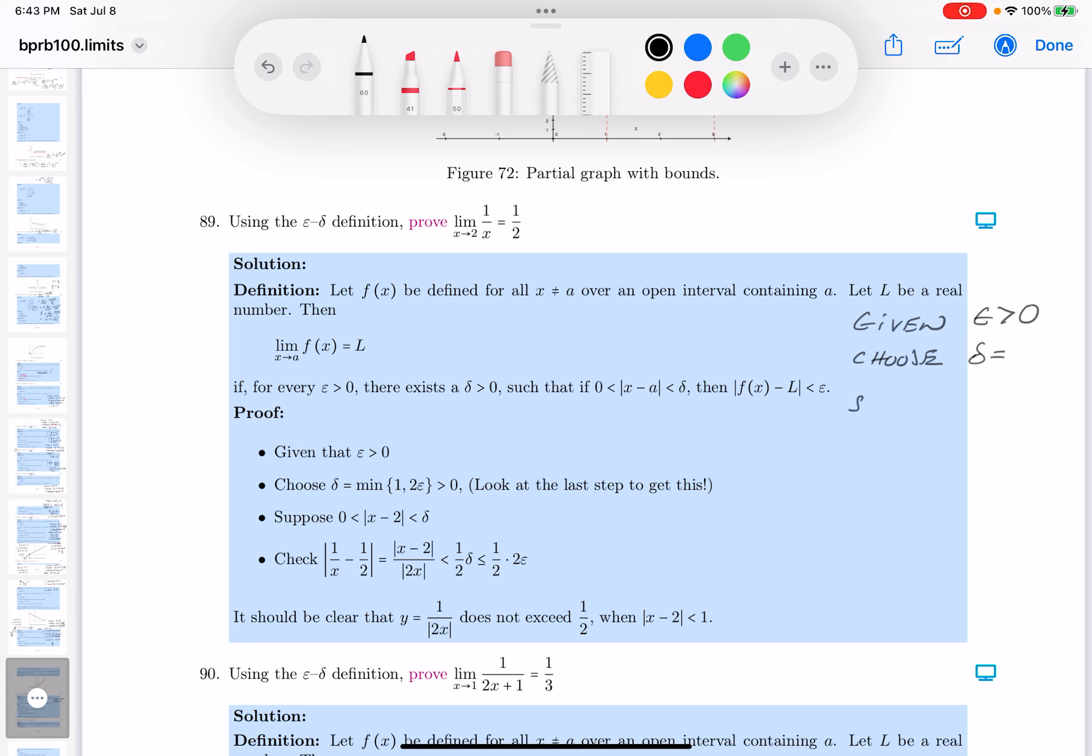And then I'm going to say, suppose... Getting a little better at writing this down now. That's going to be x minus 2 less than delta. Now I've got a check part. And let's write this down. I'm going to check.